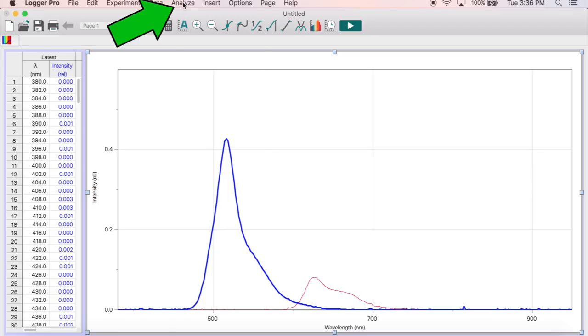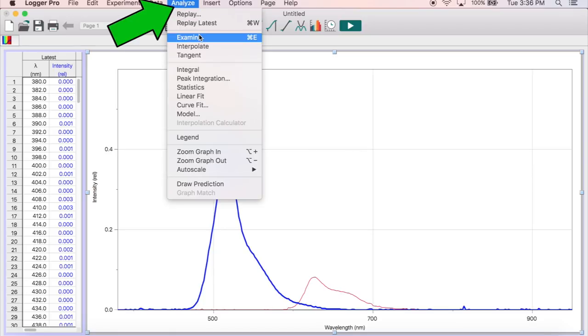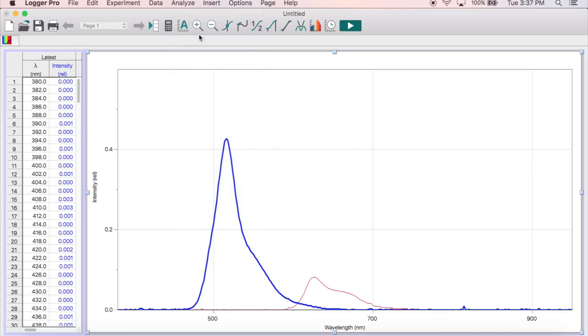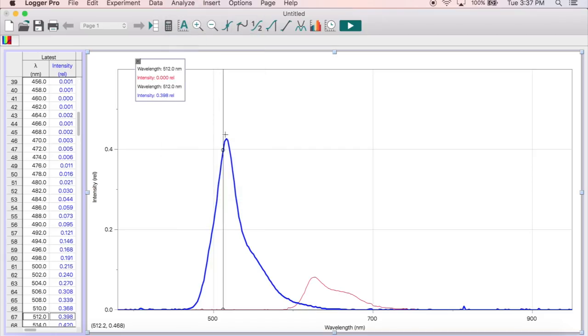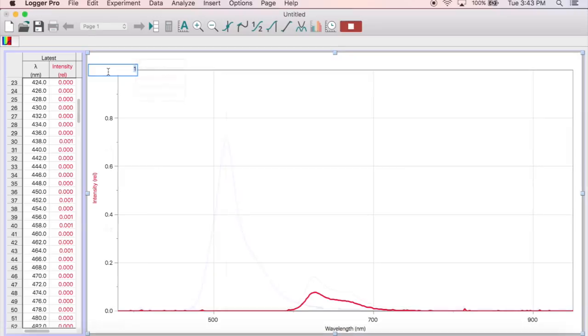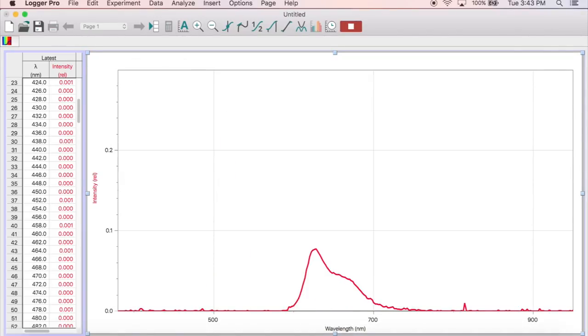To highlight a specific wavelength, click the Analyze tab at the top of the screen and select Examine from the drop-down menu. You can then move your cursor to your peak of interest. You may also need to adjust the intensity axis by clicking the uppermost y-value on the left part of the screen and entering a smaller value.